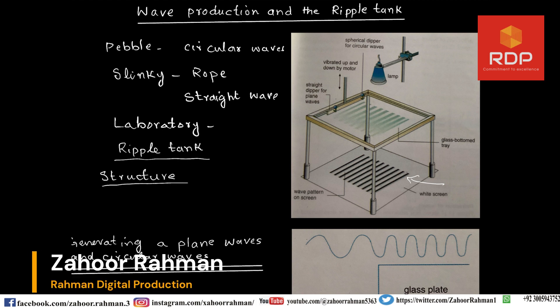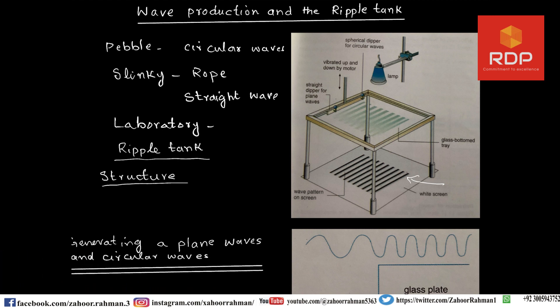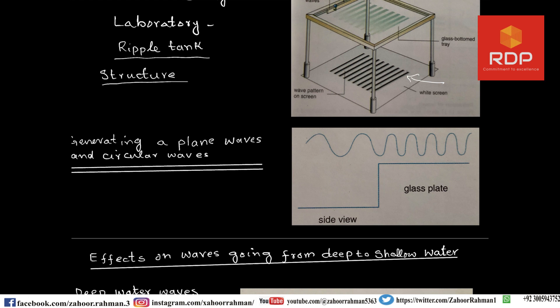The shadows are formed when water waves traverse the tray. There is also a straight dipper — this one here — through which we can produce or generate the waves. There are also spherical dippers which can produce circular waves. So the ripple tank can generate both plane waves using a straight dipper and circular waves using a spherical dipper made of plastic.